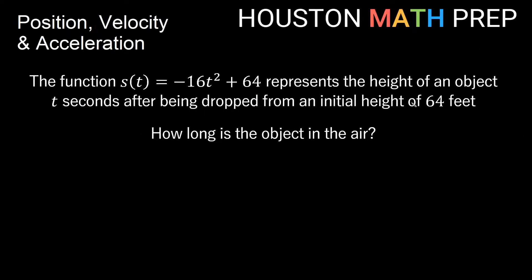Let's look at some examples. We have a position function s of t equals negative 16t squared plus 64, which represents the height of an object — vertical position — t seconds after being dropped from an initial height of 64 feet.